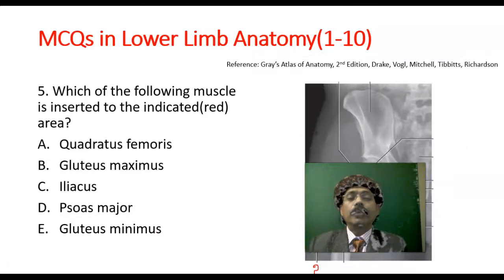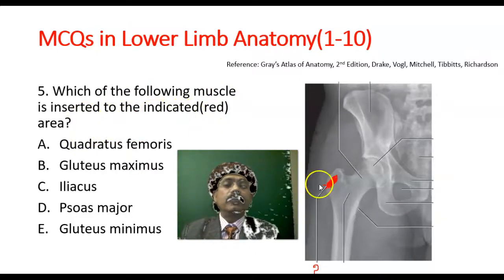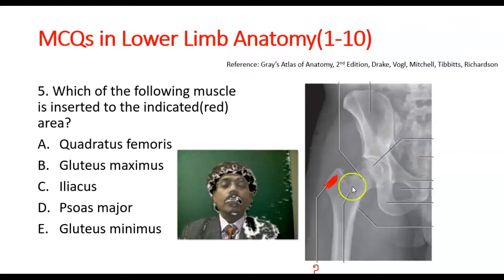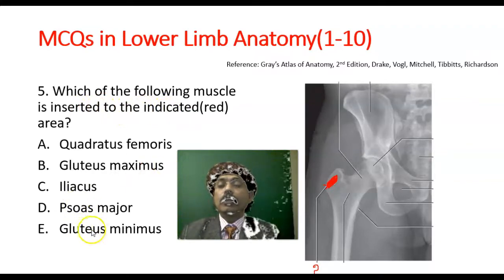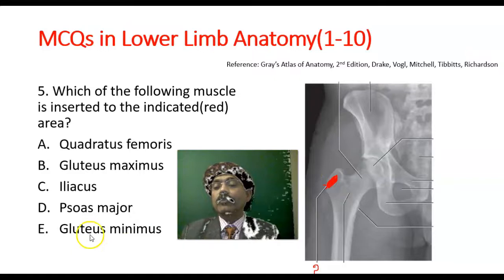Question number 5 is very important. Which of the following muscles is inserted to the indicated red area? This is the anteroposterior view of the X-ray of the pelvis. Here is the femur and this is the hip bone, and this is the greater trochanter. The muscle inserted anterolaterally on the greater trochanter is the gluteus minimus. Answer is E.